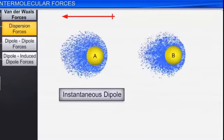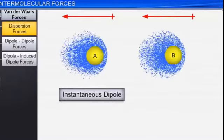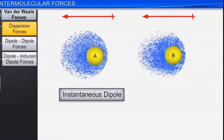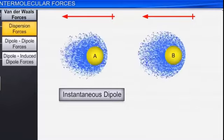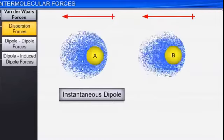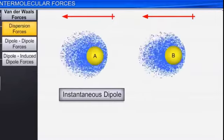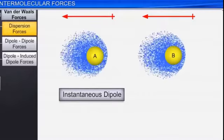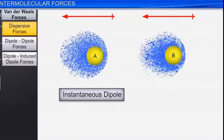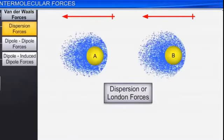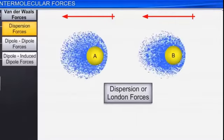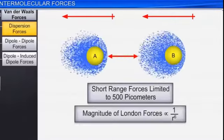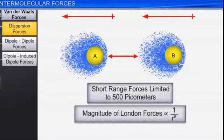Atom A is close to Atom B, and the electron distribution is induced in Atom B. Atom A induces a dipole in Atom B, and Atom A is attracted to Atom B. This is because of the instantaneous dipole moment — this force is called dispersion force.